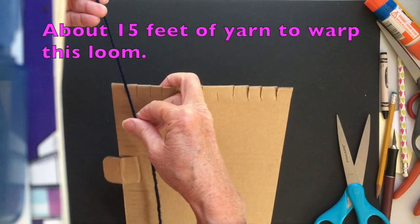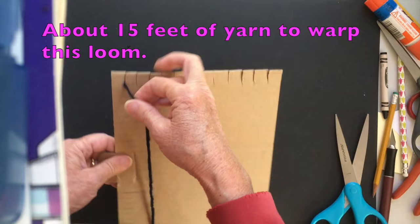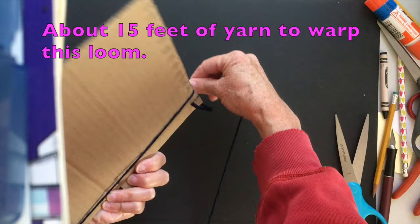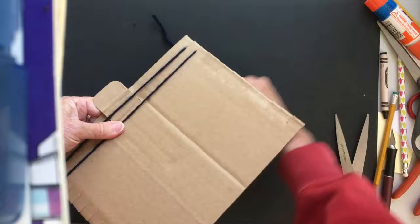It takes about 15 feet of yarn to warp or to wrap around this loom to get it to work. So I can just pull it right out of the skein and notice how I'm wrapping all the way around the board. I want to do that because I need the extra yarn in the back.